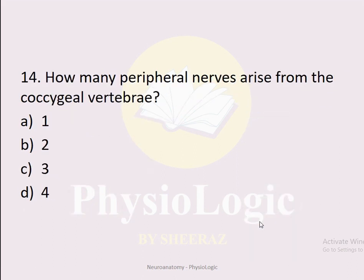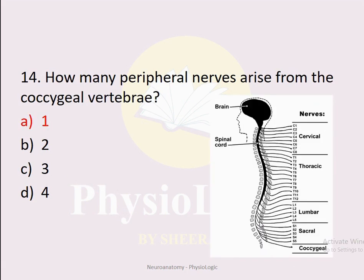MCQ number fourteen: How many peripheral nerves arise from the coccygeal vertebra? Option A: 1. Option B: 2. Option C: 3. Option D: 4. The correct option is A: 1. Only one peripheral nerve comes out of the coccyx region.